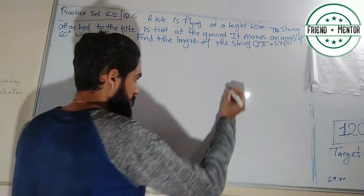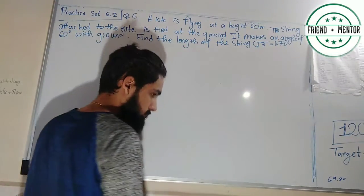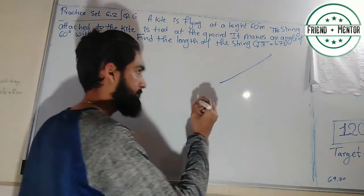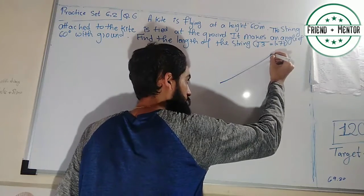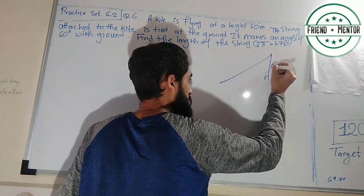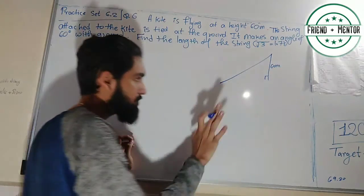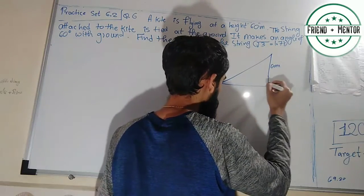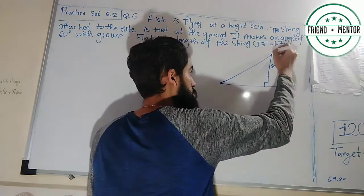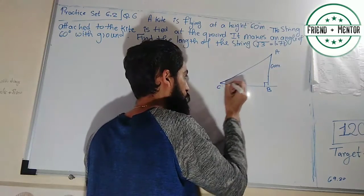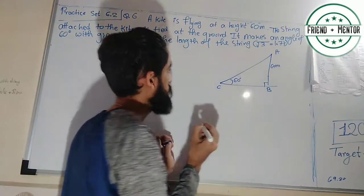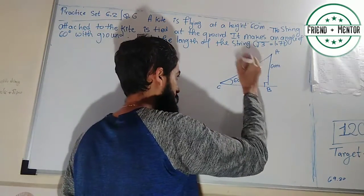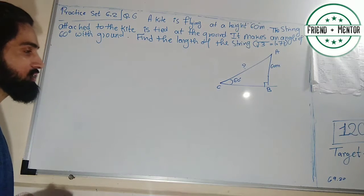Drawing the diagram: let A be the position of the kite, C be the point where the string is tied to the ground. The height AB is perpendicular to the ground. The angle at C is 60 degrees. The height is 60 meters. We need to find the length of the string AC — let it be the unknown.